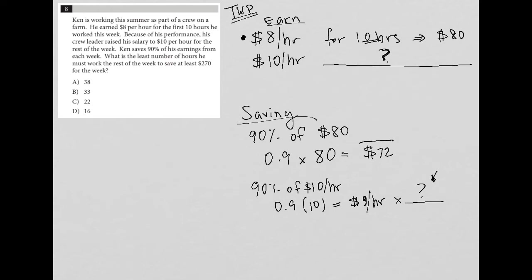We know that he saved $72, but we want, so let's say 72 plus some unknown savings equals our $270.